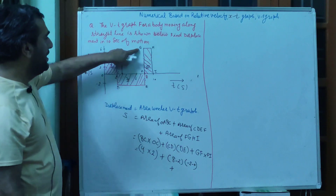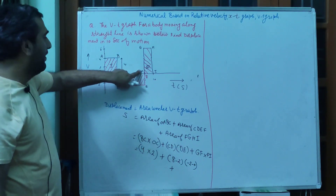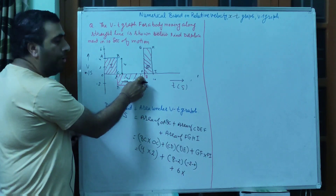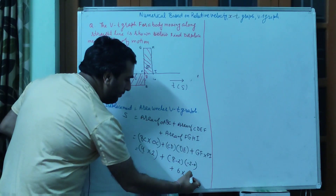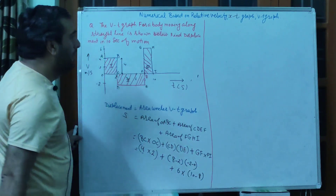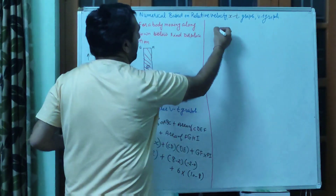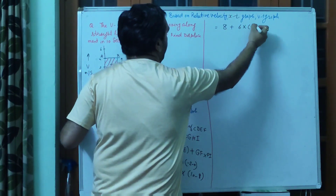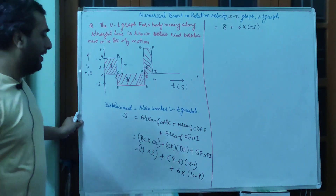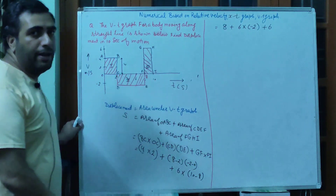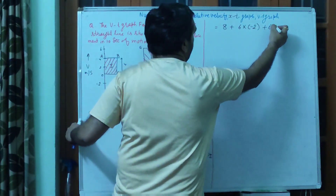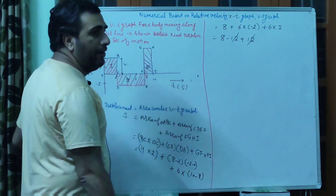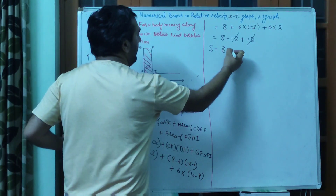Plus GF की value हमारे पास आगी 6, into FI — final coordinate 10, initial coordinate 8, तो 10 minus 8। अब इसको solve करेंगे: 4 into 8 = 32... minus 12, plus 12। Minus 12 और plus 12 cancel out, तो distance is 8 meter। जब time T = 10 second था, तो body 8 meter का distance travel करेगी।